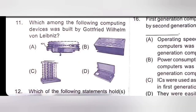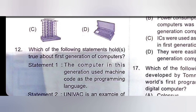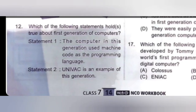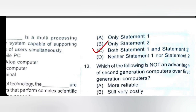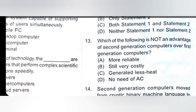Stafford Rock owner developed a digital mechanical calculator, and Gottfried Williams invented something. So A is the right option. Which of the following statements hold true about the first generation of computers? Statement 1: computers in this generation used machine code as the programming language. Statement 2: UNIVAC is an example of this generation. Both statements are correct, so C is the right option. Which of the following is not an advantage of second generation computers over the first generation? More reliable, still very costly, generated less heat — D is the right option.